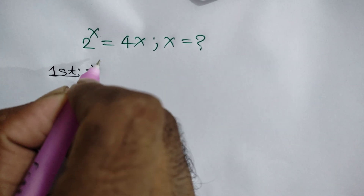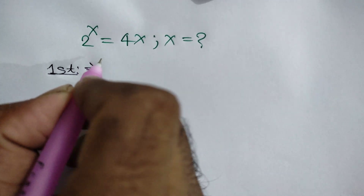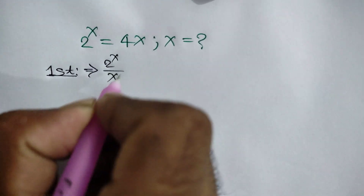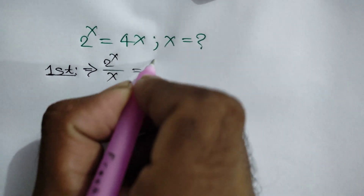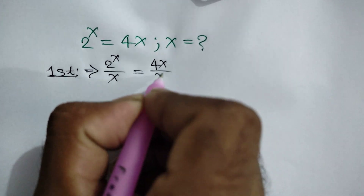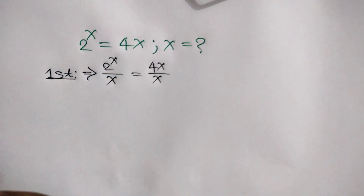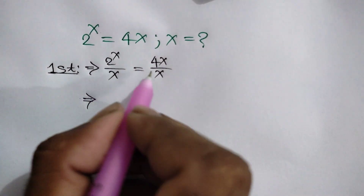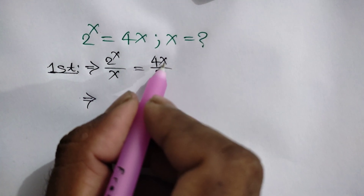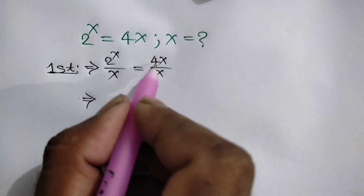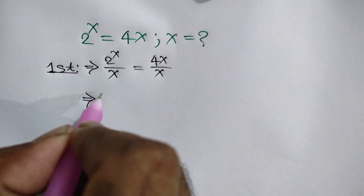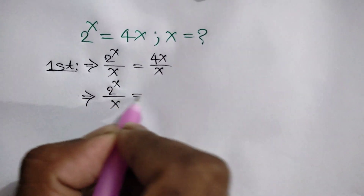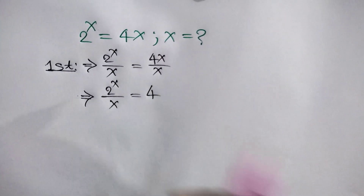Dividing both sides by x, we can write 2 to the power x over x is equal to 4x over x. This x cancels with this x, so here we will get 4. Now, we can write 2 to the power x over x is equal to 4.